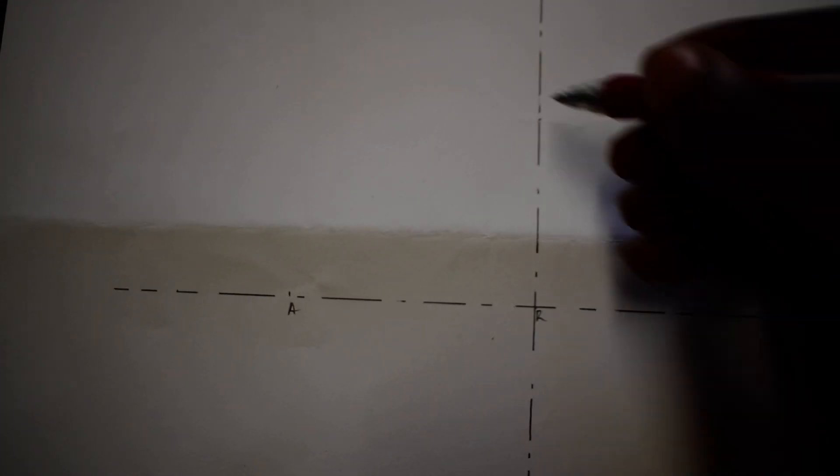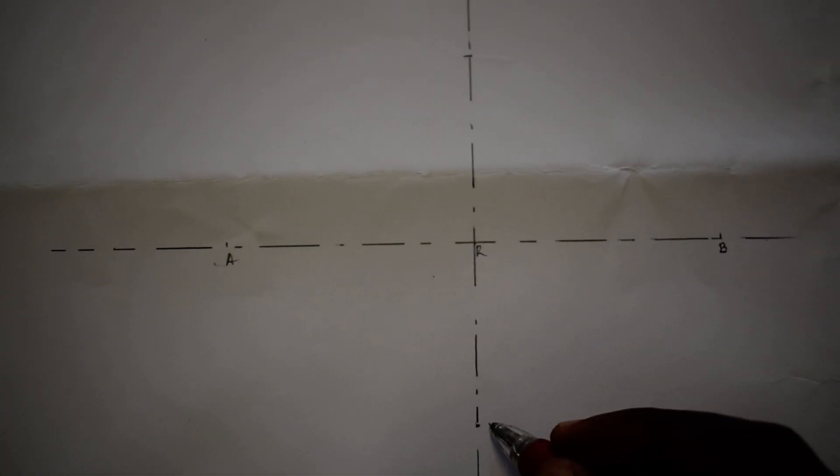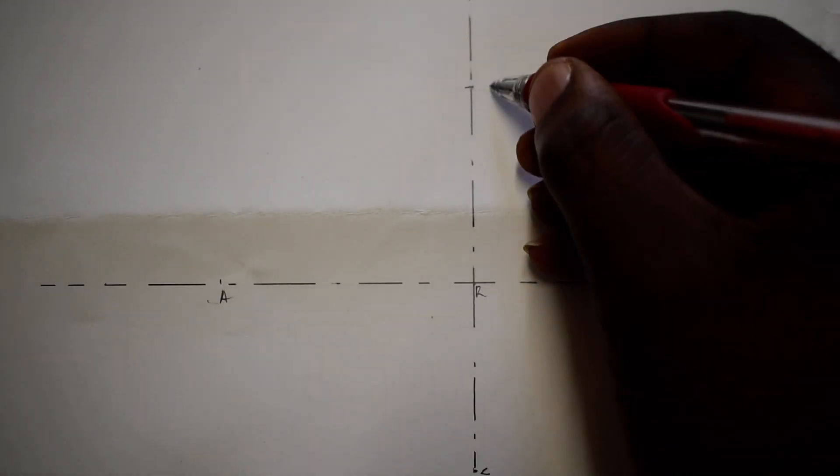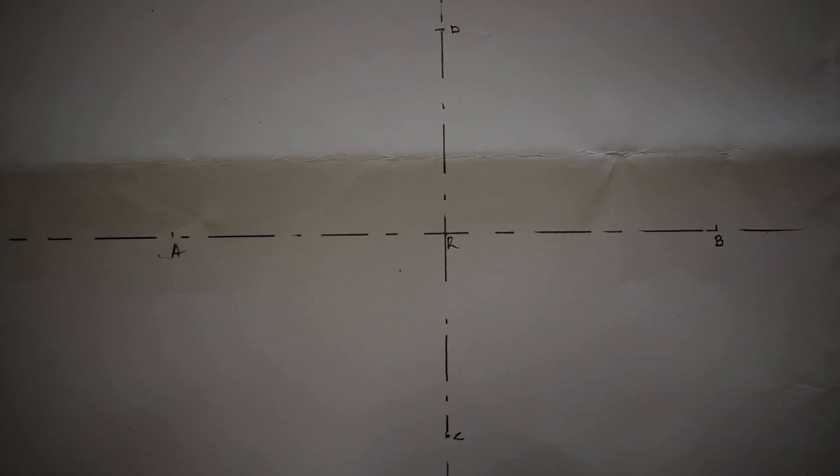So after you've gotten that, remember we've got A, B, so this one is going to be C and this one point D. So after we've gotten the point A, B, C, D, what do you do? You take your drawing and you put it at point R.